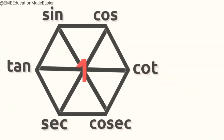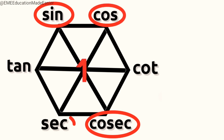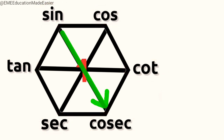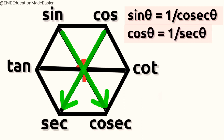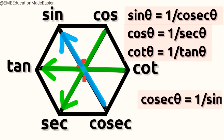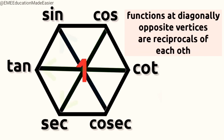There's more to learn. Let's draw the super hexagon once again. Focus on the functions at the diagonally opposite vertices: sin and cosec, cos and sec, cot and tan — they are reciprocals of each other. This arrow tells us that sin theta equals one by cosec theta. This arrow tells us that cos theta equals one by sec theta. And this arrow tells us that cot theta equals one by tan theta. If the arrow is drawn the other way, we can say cosec theta equals one by sin theta. Functions at diagonally opposite vertices are reciprocals of each other.